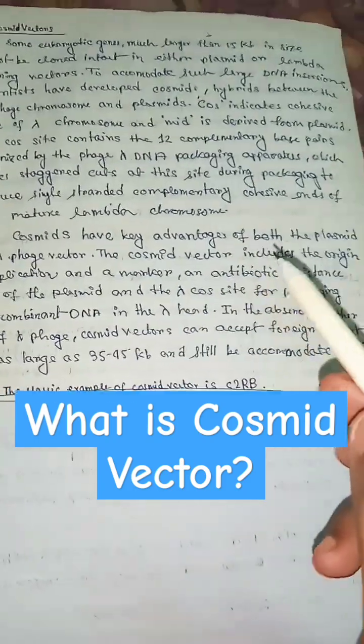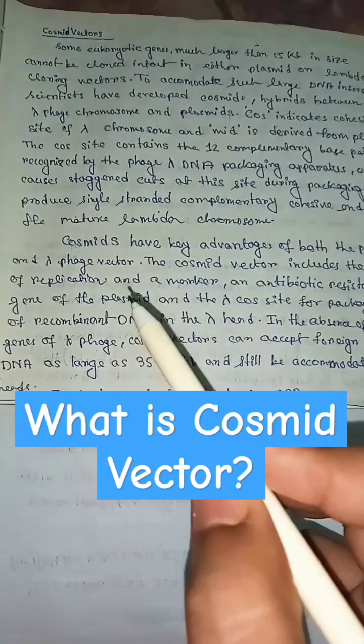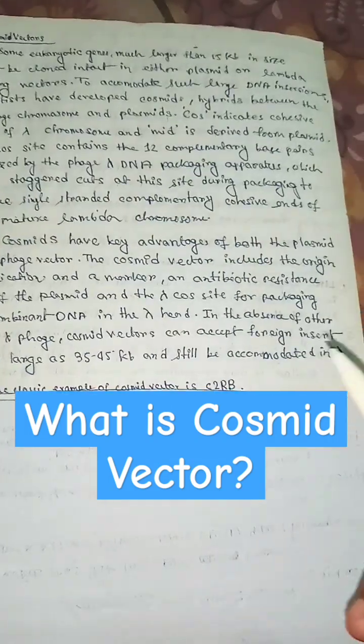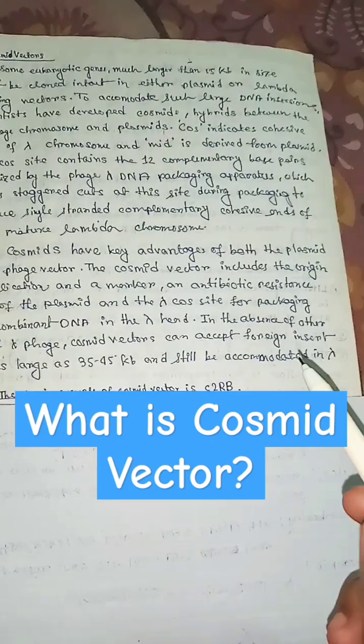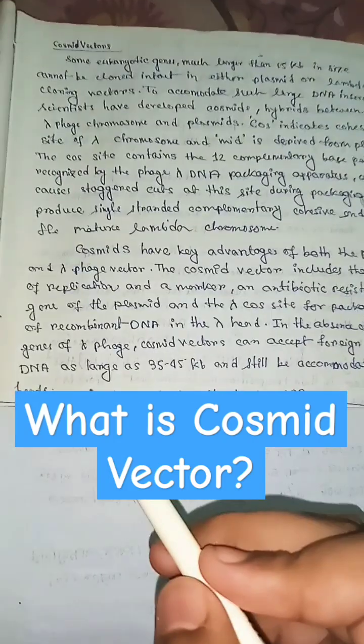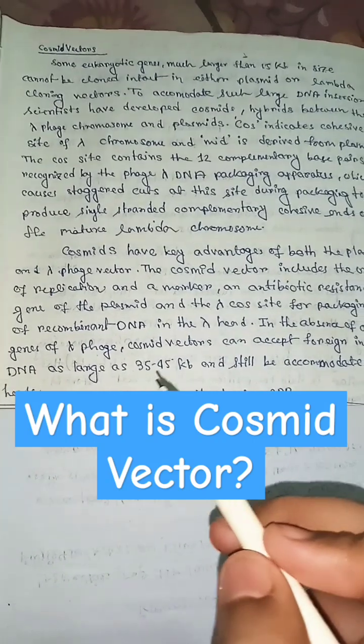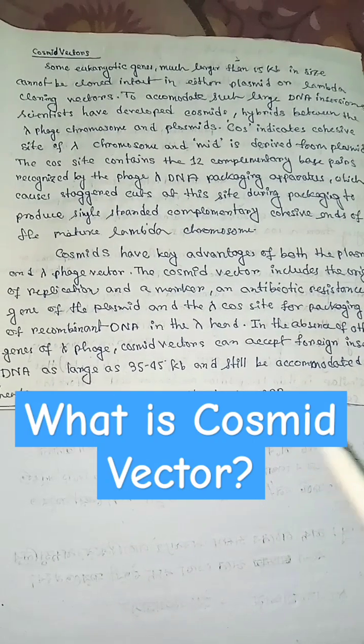Cosmids have key advantages of both the plasmid and lambda phage vector. In the absence of other genes of lambda phage, cosmid vectors can accept foreign inserts of DNA as large as 35 to 45 kilobase, e.g., C to Rb.